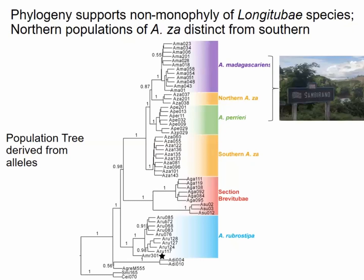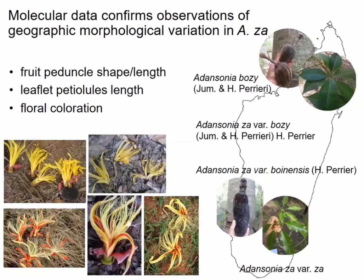This molecular data confirms geographic variation observations described almost 100 years ago. Populations in the north typically have sessile, elongated leaflets, while southern populations differ. They also differ in fruit peduncle shape — elongated and narrow in the north, shorter and fatter in the south — as well as floral color and markings showing geographic patterns. Combined with the molecular data, this suggests we may need to resurrect old species names and conduct taxonomic revisions for za.